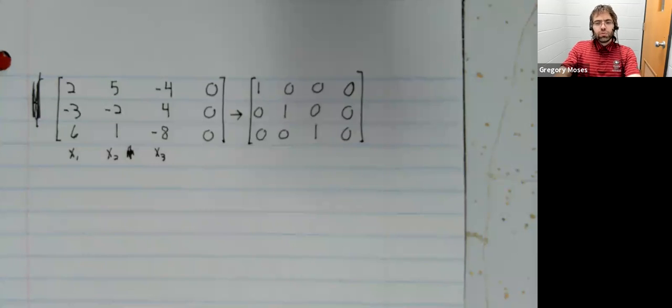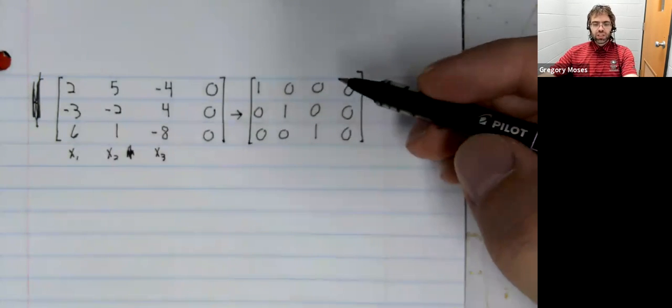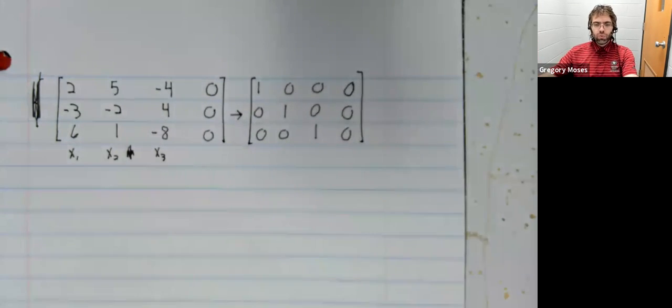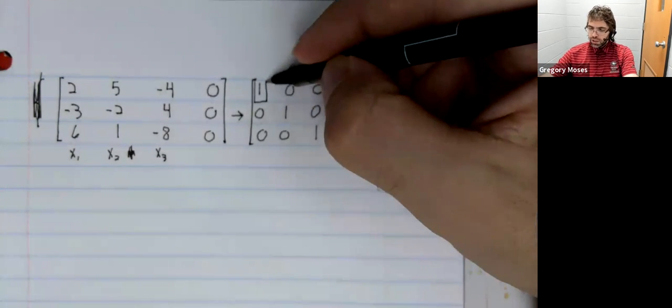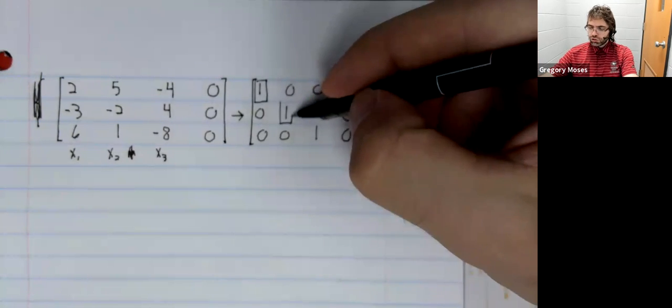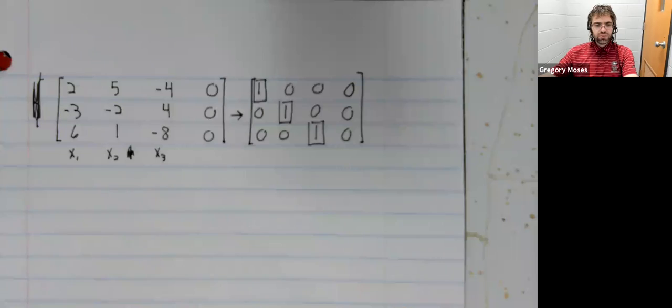We only really needed to perform Gaussian elimination. I performed the full Gauss-Jordan elimination. Now that this matrix is in row echelon form, in fact, reduced row echelon form, its leading entries can be seen.